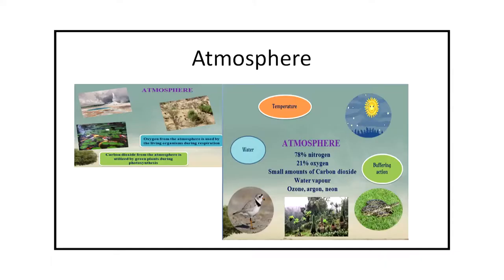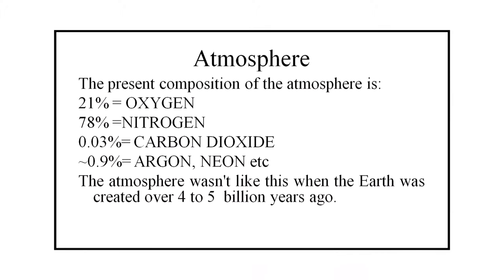The next condition for life on Earth sustained is atmosphere. The most important components in the atmosphere are oxygen, carbon dioxide, water vapor, etc. The present composition of the atmosphere is 21% oxygen, 78% nitrogen, 0.03% carbon dioxide, and less than 0.9% argon and neon. The atmosphere was not like this when the Earth was created over 4 to 5 billion years ago.